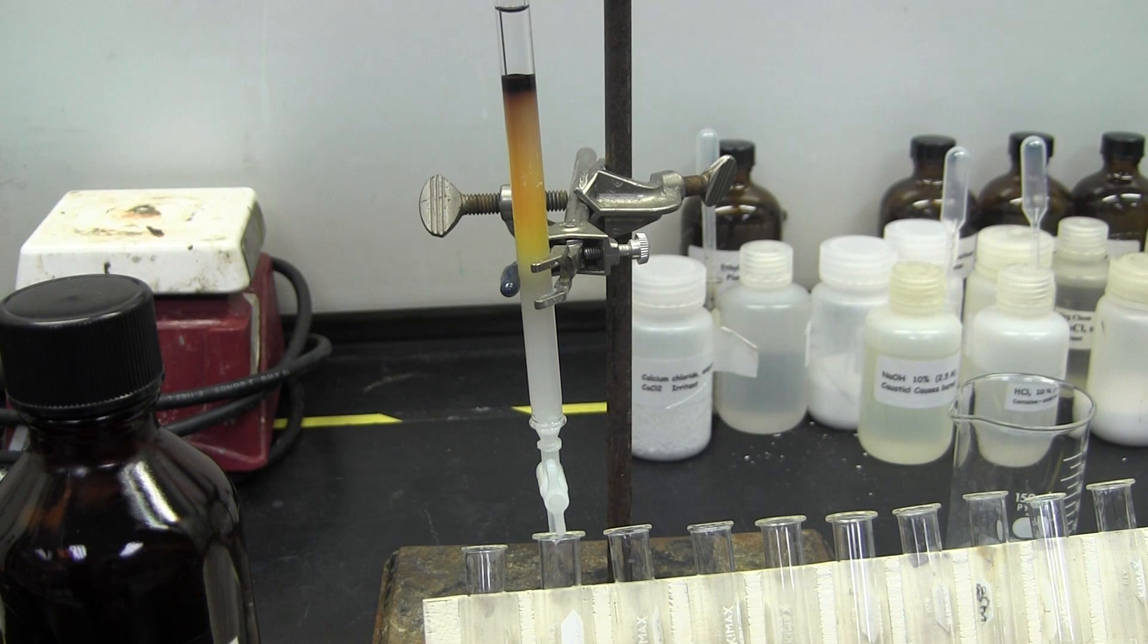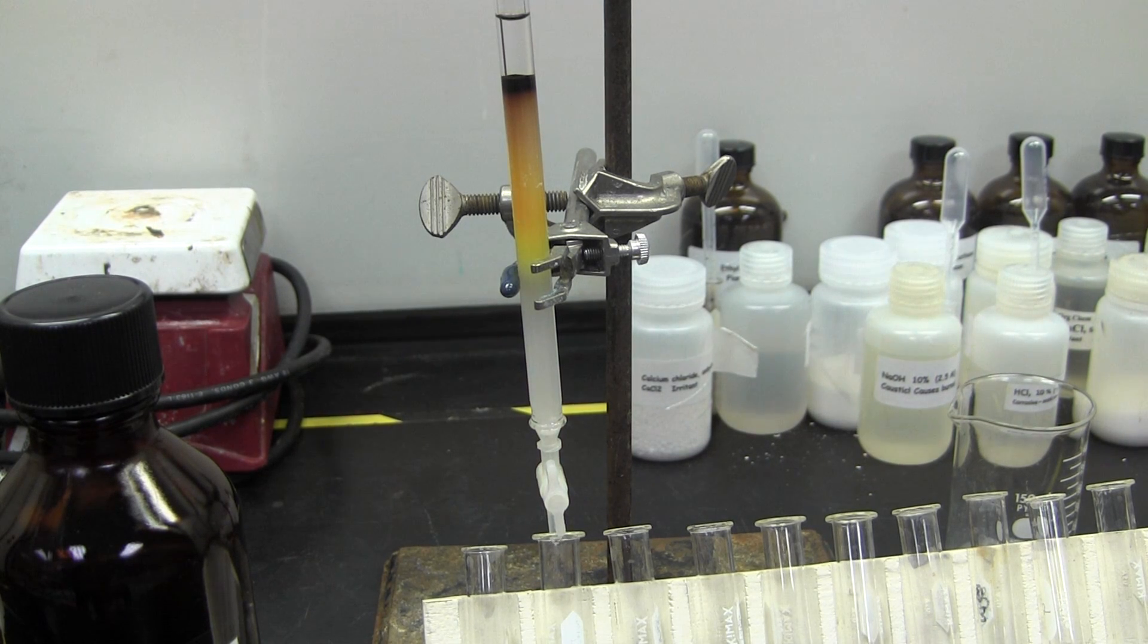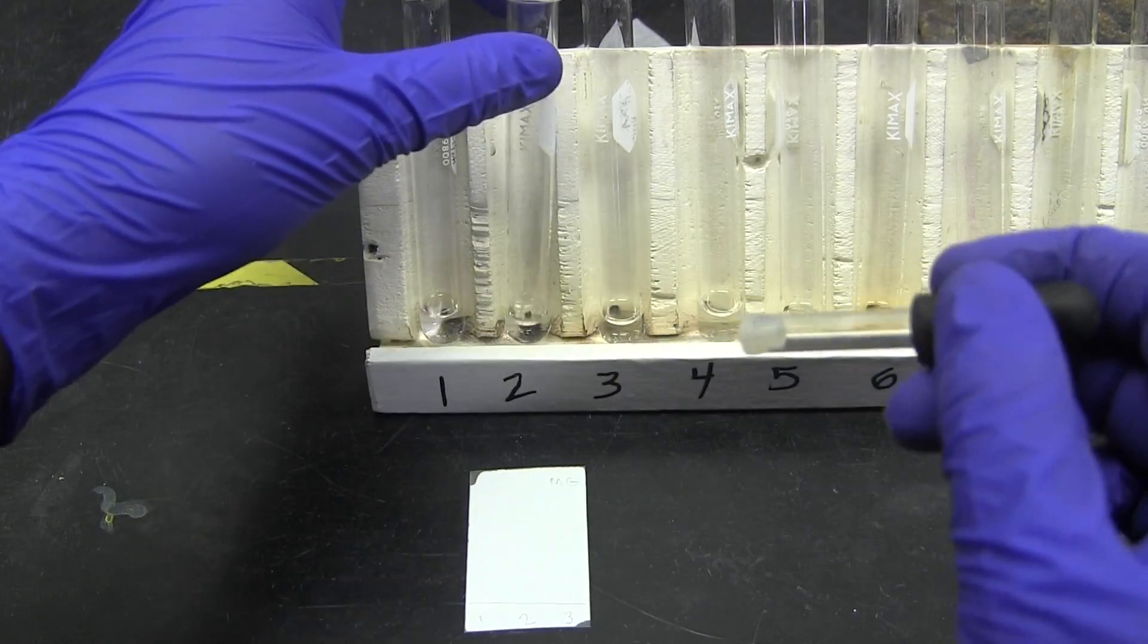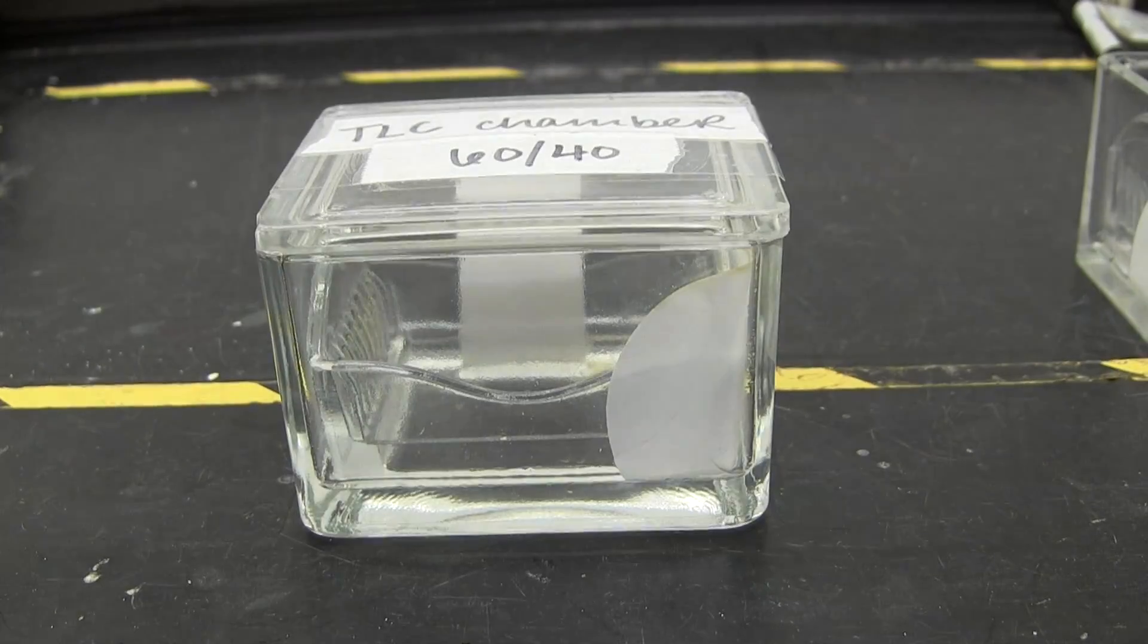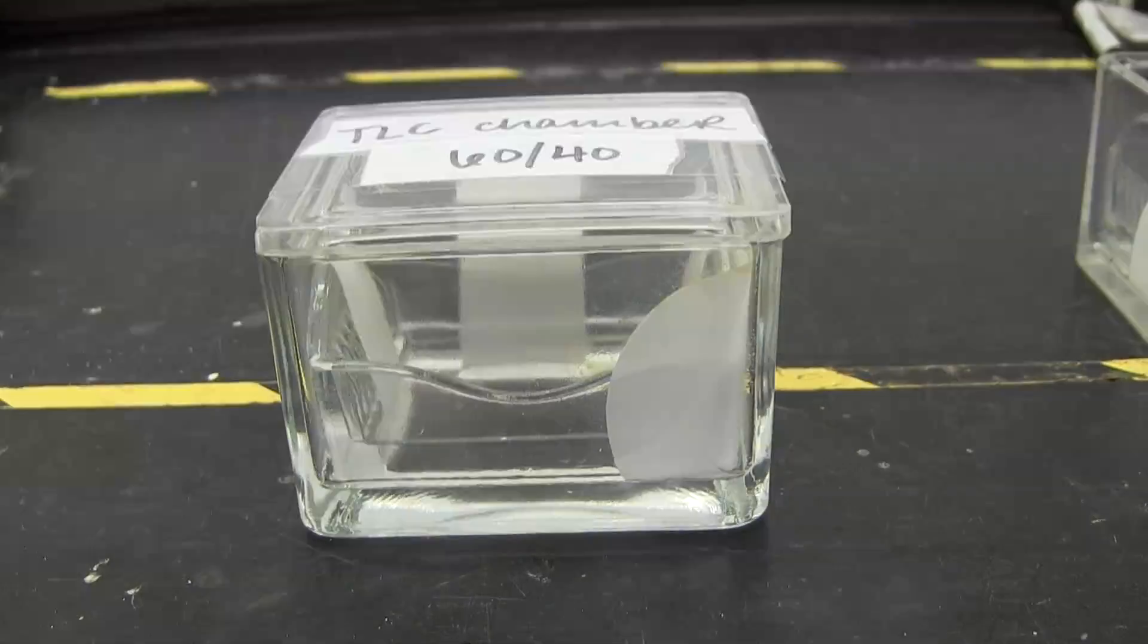Begin collecting fractions of your elutin in test tubes. Each should fill a small test tube about three-quarters of an inch. Use the TLC test to determine which fractions contain which unknowns. Run three fractions on a plate and continue collecting fractions until dots no longer appear under the UV lamp.